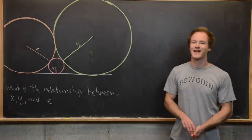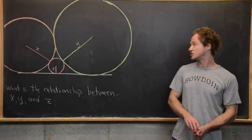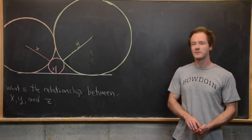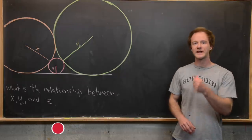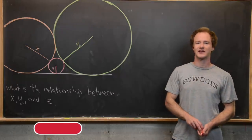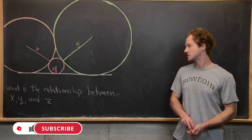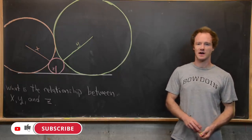Here we're going to look at a pretty classic Japanese geometry problem that has to do with three circles that are tangent all to the same line.